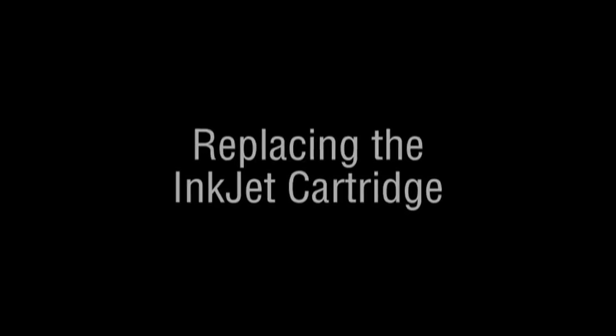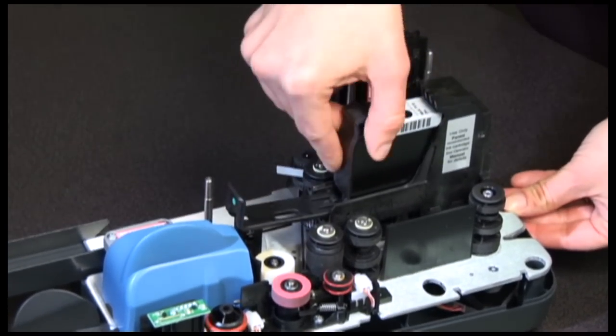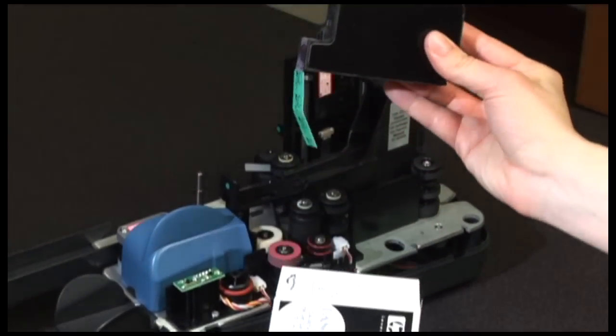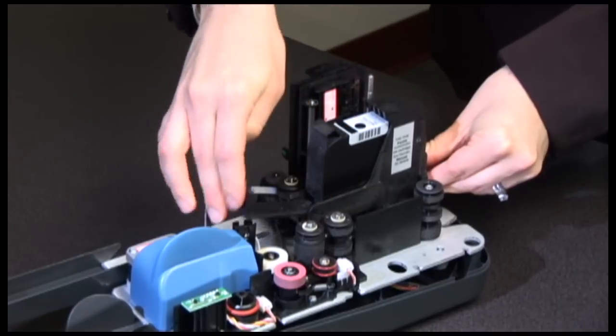Replace the inkjet cartridge is a standard procedure for operators. Remove the used print cartridge by pushing down on the plastic retainer. To replace an inkjet cartridge, obtain a new cartridge and remove the plastic tape from the nozzle. Insert the new cartridge into the device.